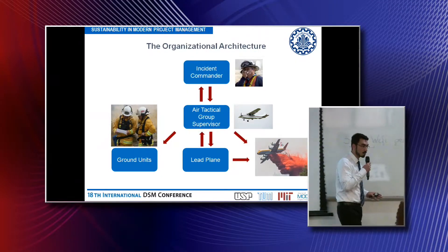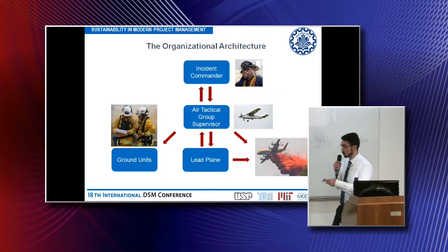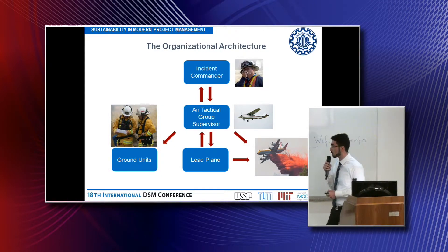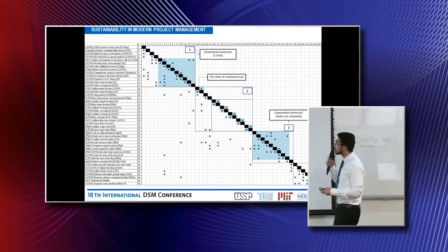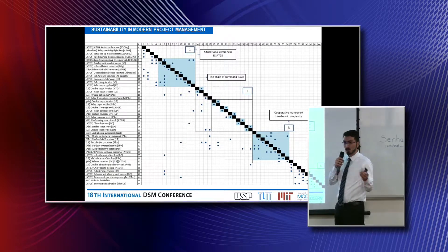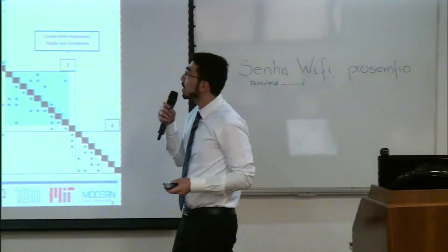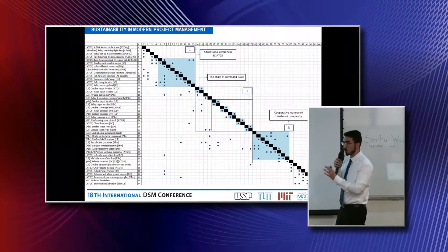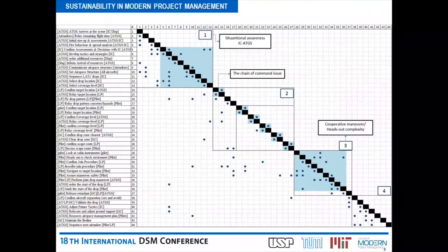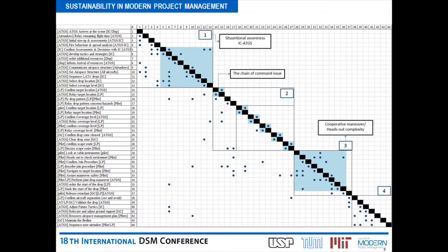It seems very straightforward and simple, but the process architecture shows otherwise. You probably need a telescope to see what's going on here, but as a first impression, the DSM shows that the process can be divided into four phases, three of which are obviously showing some interconnections.